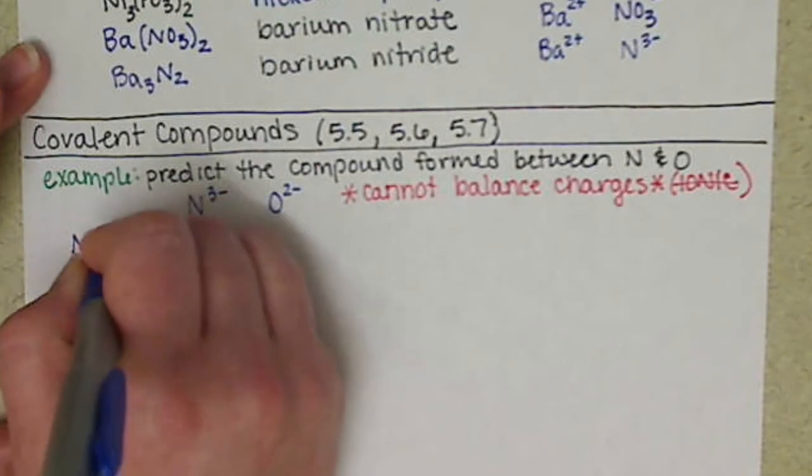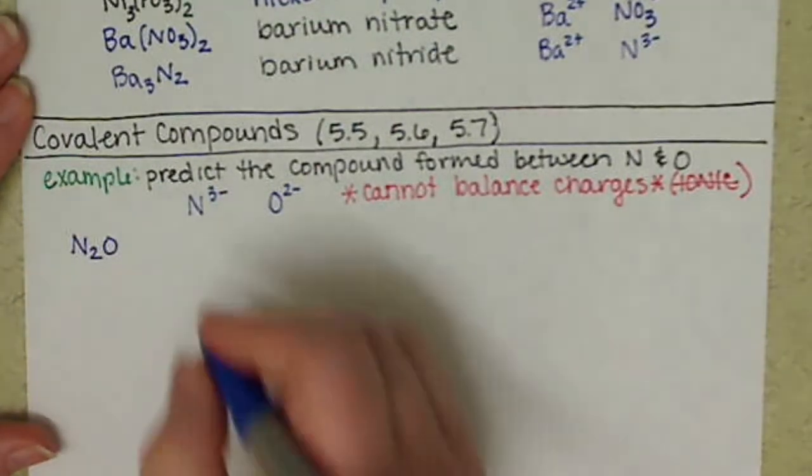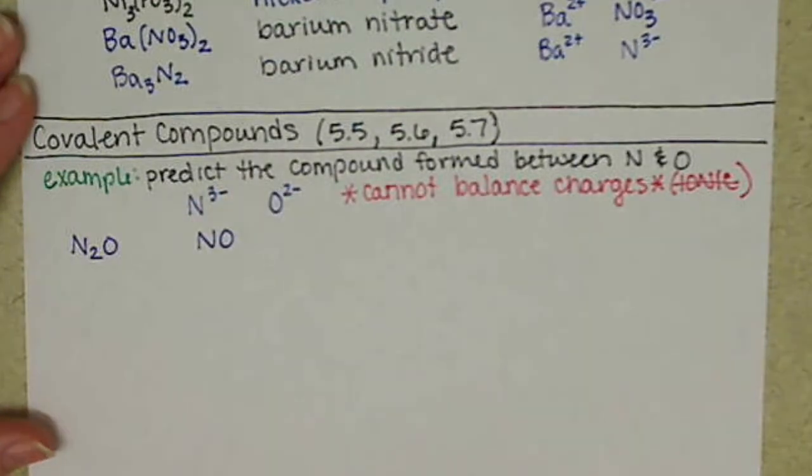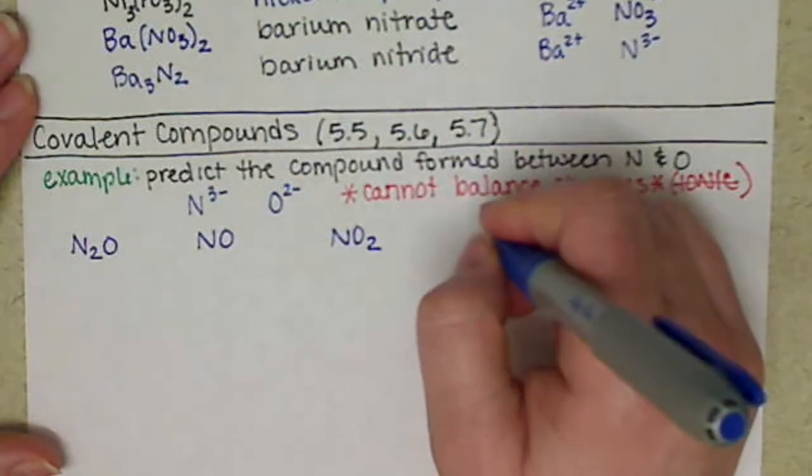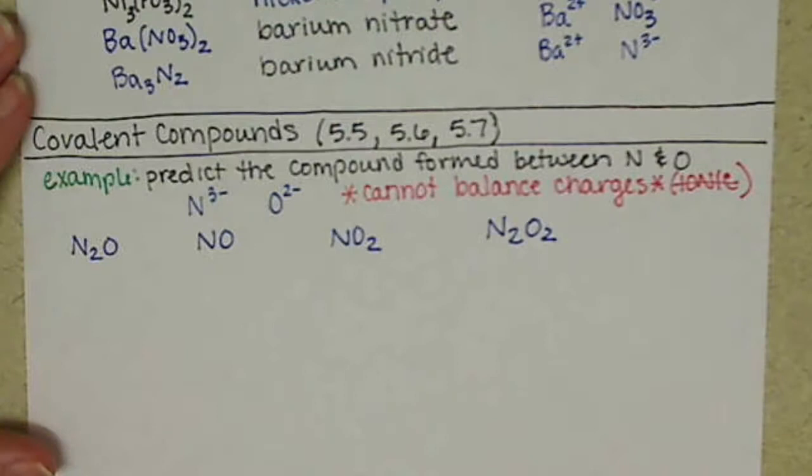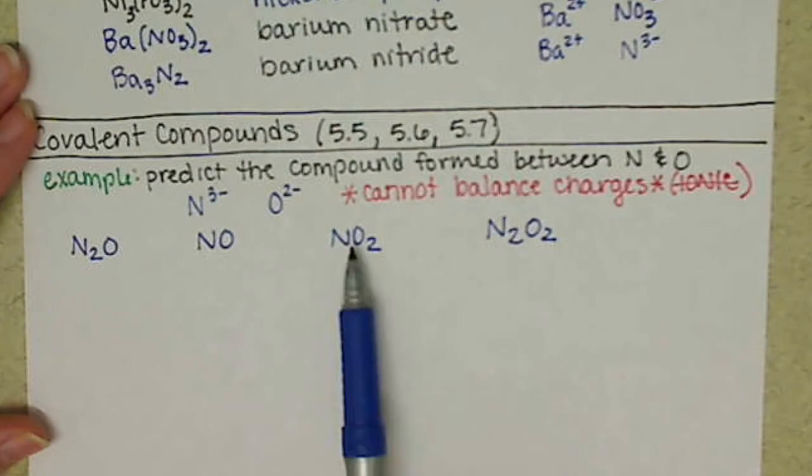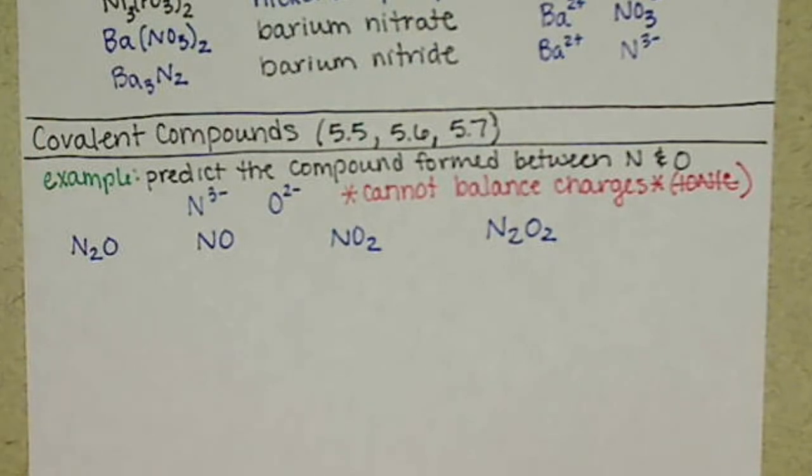In the case of covalent compounds, because we're sharing these electrons, there's a number of different ways that these two atoms can share electrons. They can share them in a two-to-one, they can share them in a one-to-one or a one-to-two, or something that violated what we looked at in ionic, they could share it in a two-to-two ratio. We don't have to reduce our subscripts like we did in the ionic compounds. So in order to reflect that we have these different options, we have to go about naming covalent compounds differently than we do for ionic compounds.